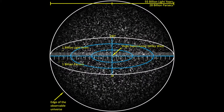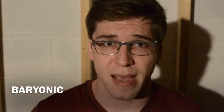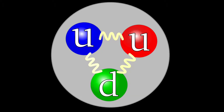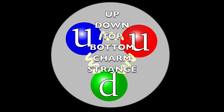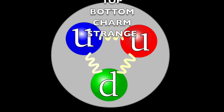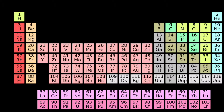Now actually the entirety of the observable universe is made of matter. To be more specific, it's made out of baryonic matter. A baryon is just a particle that is made up of any combination of three of the six different types of quarks: up, down, top, bottom, charm, and strange. It's the kind of matter that we put on our periodic table.